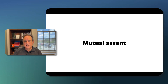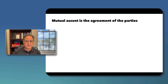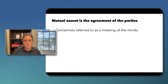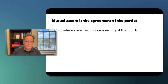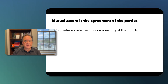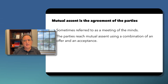Let's talk about mutual assent — the first required element of a contract. Mutual assent is the agreement of the parties; it's just a legal term reflecting agreement. Sometimes we refer to this as a meeting of the minds — the parties agreed as to the terms and conditions of the contract. The parties reach mutual assent using a combination of an offer and an acceptance.